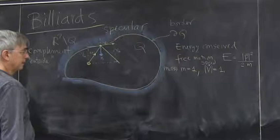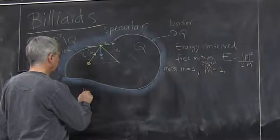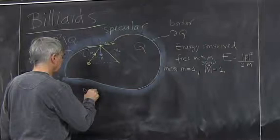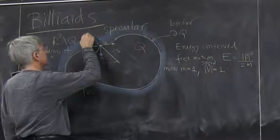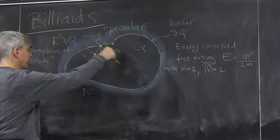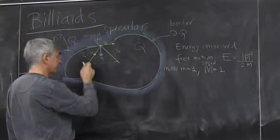So then the law of reflection. Momentum at time p n plus 1, so after the impact, let's say this is now impact n. So we count first impact, second impact, third impact, fourth. So time is integer time which is naturally defined.